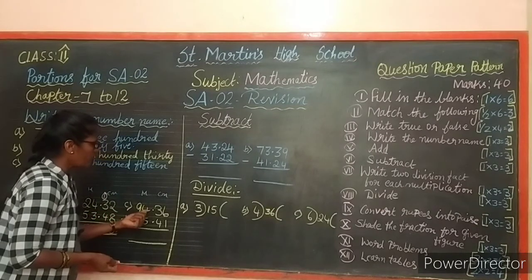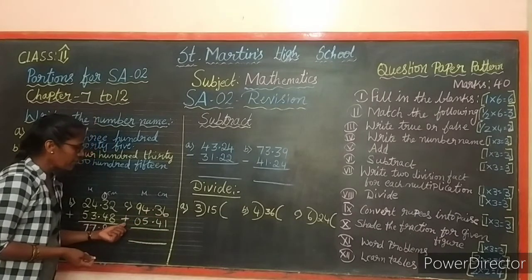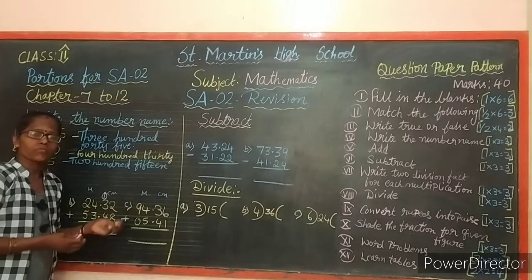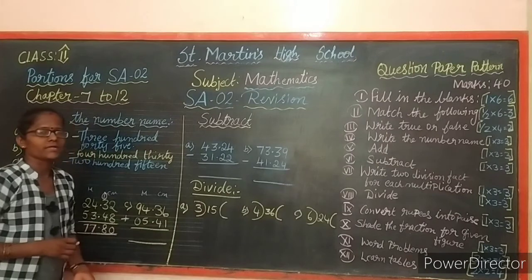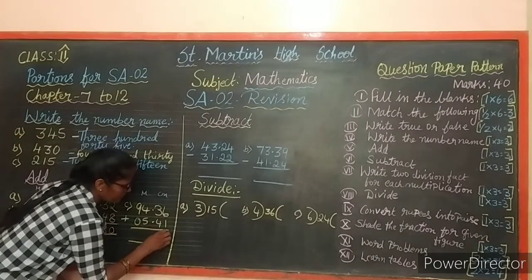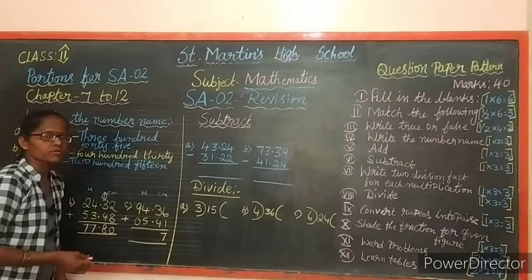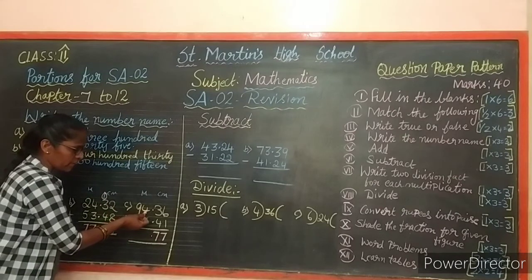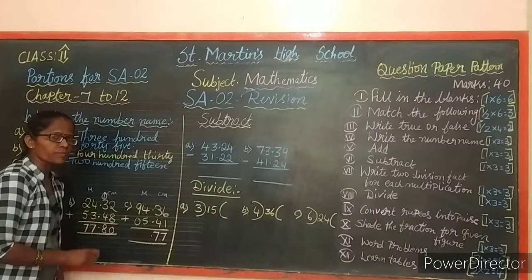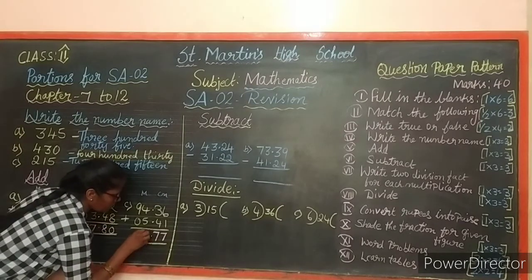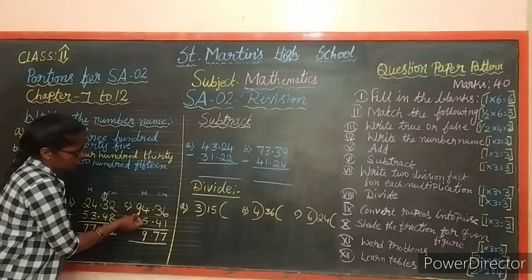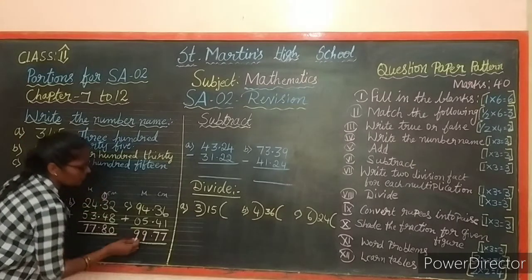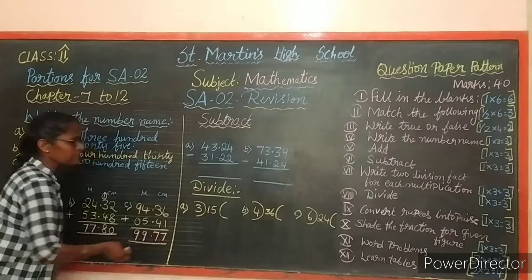Third sum: 94 meters 36 centimeters plus 5 meters 41 centimeters. Ones place: 6 plus 1 equals 7. Then 3 plus 4 equals 7. Keep a full stop. Meters: 4 plus 5 equals 9, and 9 plus 0 equals 9. The answer is 99 meters 77 centimeters.